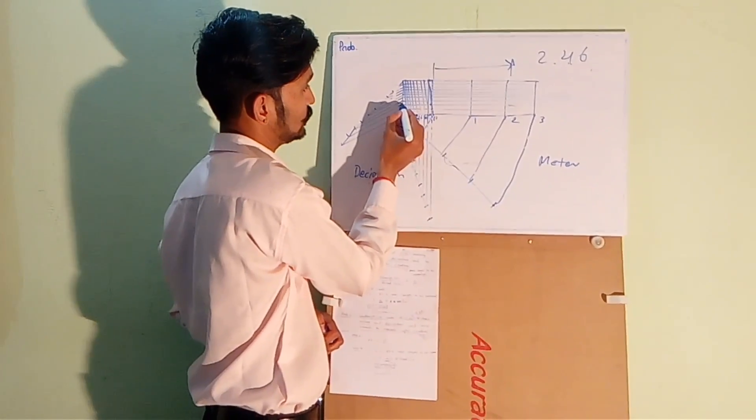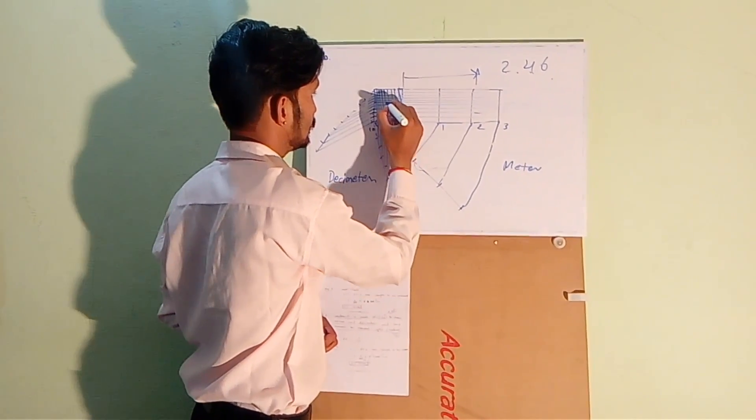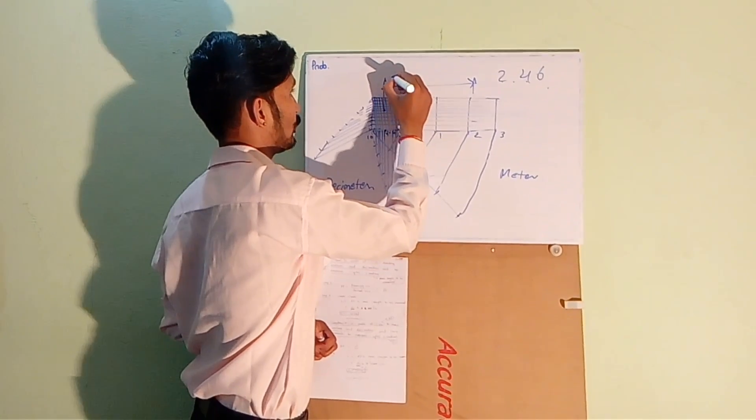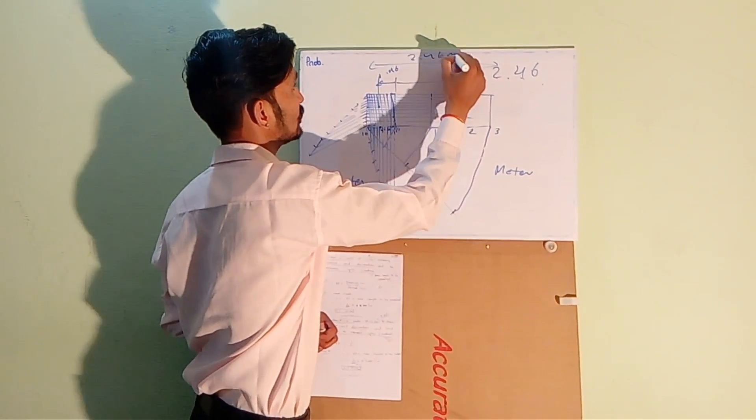1, 2, 3, 4, 5, 6. 1, 2, 3, 4, 5, 6. And this is the 4th one. So this point will give us 0.46. So the total length will be 2.46 meter.